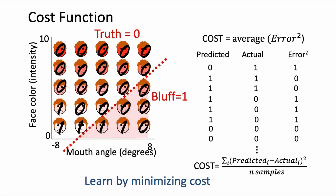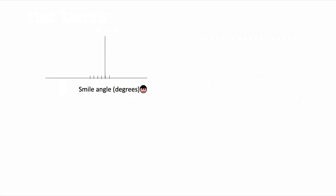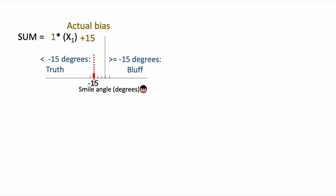Learning means finding values for the weights and bias such that errors tend towards 0 and the cost function is minimized. To visualize this, let's look at what learning looks like for a single-neuron perceptron model with one-dimensional input — our one-dimensional bluffing example using only mouth angle as a predictor. The actual pattern in the data was that your friend starts bluffing when their mouth angle is greater than negative 15 degrees. This corresponds to a weight equal to 1 and a bias equal to 15, because it's when the mouth angle is negative 15 degrees that the sum 1·x + 15 = 0.